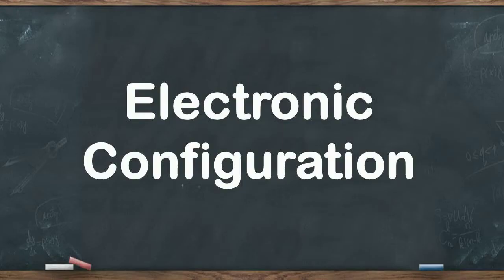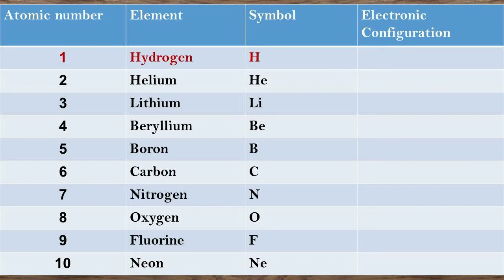Based on this information, we will now study the electronic configuration of the first 20 elements. The atomic number of hydrogen is 1, meaning it has 1 electron, which gets accommodated in the K shell. Thus, the electronic configuration of hydrogen is 1. The atomic number of helium is 2, meaning it has 2 electrons. As the K shell can accommodate maximum 2 electrons, both electrons are placed in the first shell. The electronic configuration of helium is 2. The atomic number of lithium is 3. After filling 2 electrons in K shell, the remaining 1 electron will occupy the L shell. Hence, the electronic configuration of lithium is 2, 1.